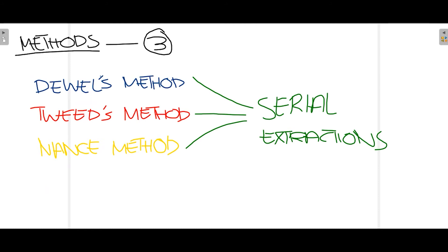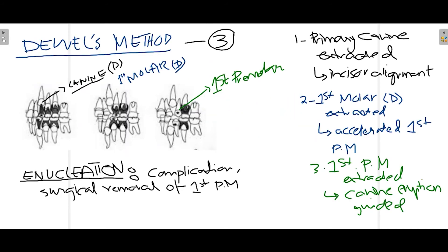There are three main methods where serial extraction is performed. The first is Dewel's method, which is most commonly used. The second is Tweed's method and Nance's method, which are almost similar to each other and less commonly performed. Dewel's method is the primary method used in patients requiring serial extractions.